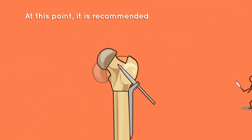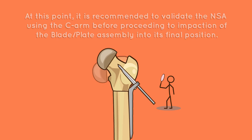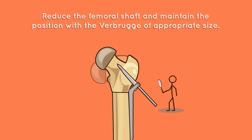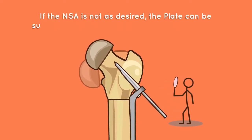Step 9: NSA validation. At this point, it is recommended to validate the NSA using the C-arm before proceeding to impaction of the blade plate assembly into its final position. Reduce the femoral shaft and maintain the position with the Verbrugge clamp of appropriate size. If the NSA is not as desired, the plate can be substituted to adjust by approximately 10 degree increments.